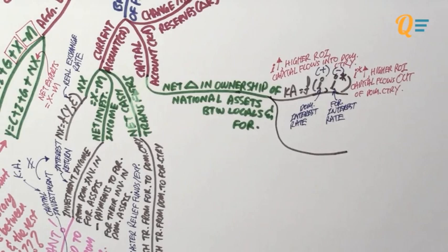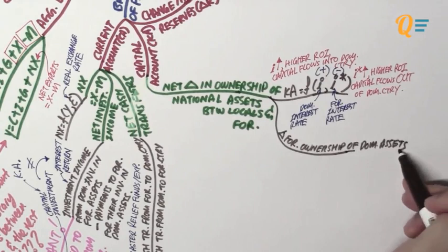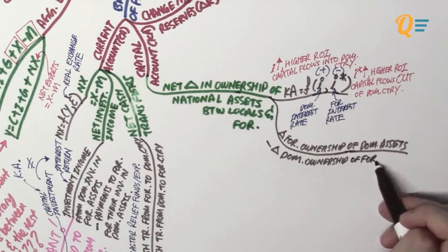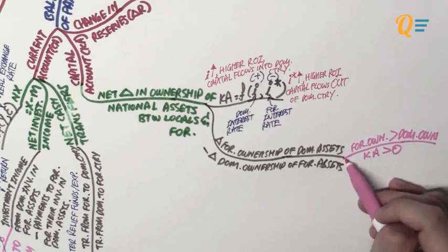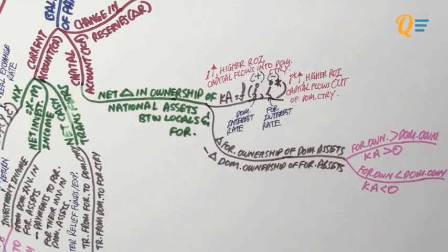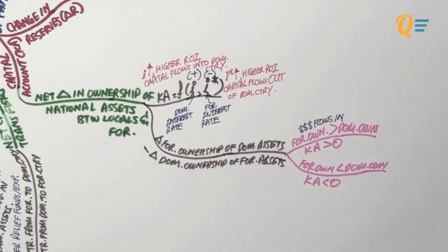You can summarize the capital account as the change in foreign ownership of domestic assets minus the change in domestic ownership of foreign assets. When there are more foreigners owning domestic assets than domestic people owning foreign assets, your capital account is greater than zero — capital is flowing into the country. And when there is lesser foreign ownership of domestic assets than domestic ownership of foreign assets, your capital account is less than zero — capital is flowing out of the country.